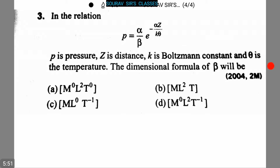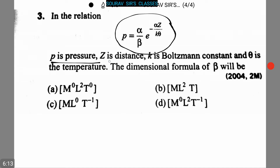Here is our next question: In the relation P = (alpha/beta) × e^(−alpha·z / k·theta), where P is pressure, z is distance, k is Boltzmann's constant, and theta is temperature — the dimensional formula of beta will be which of the following four options?